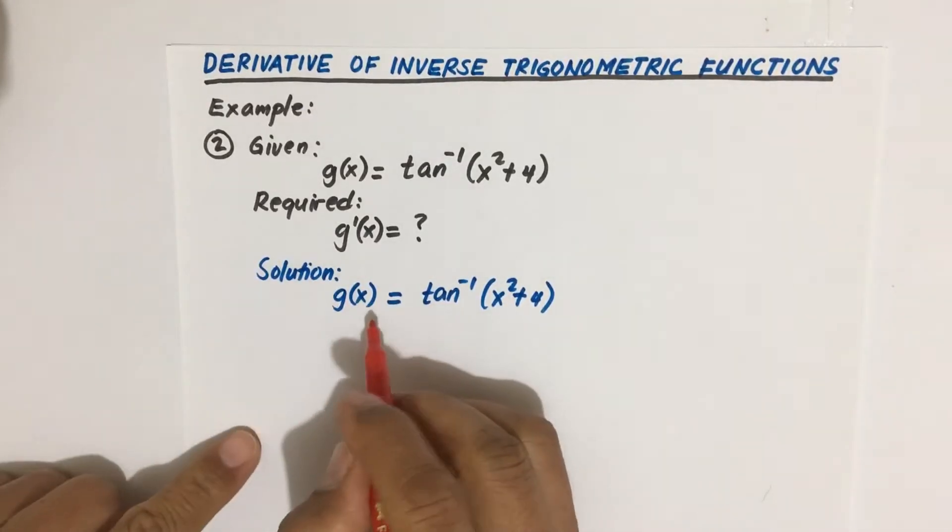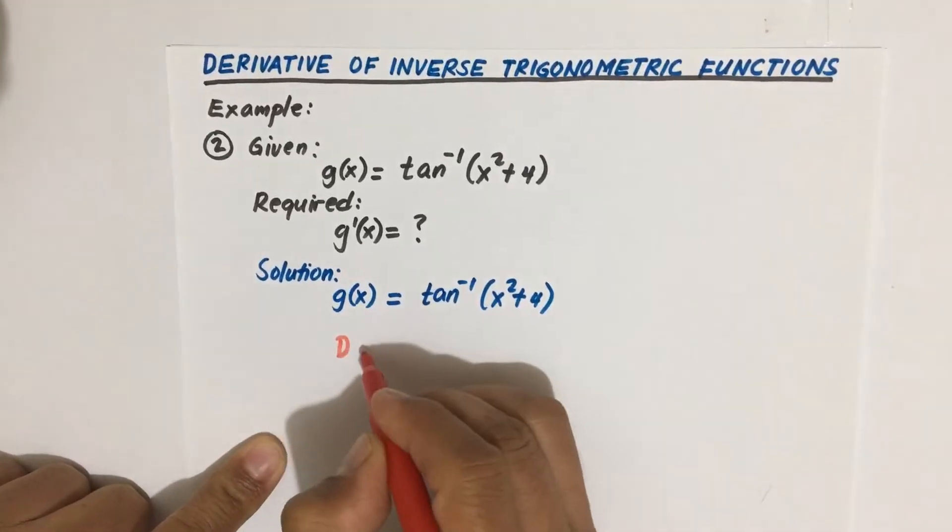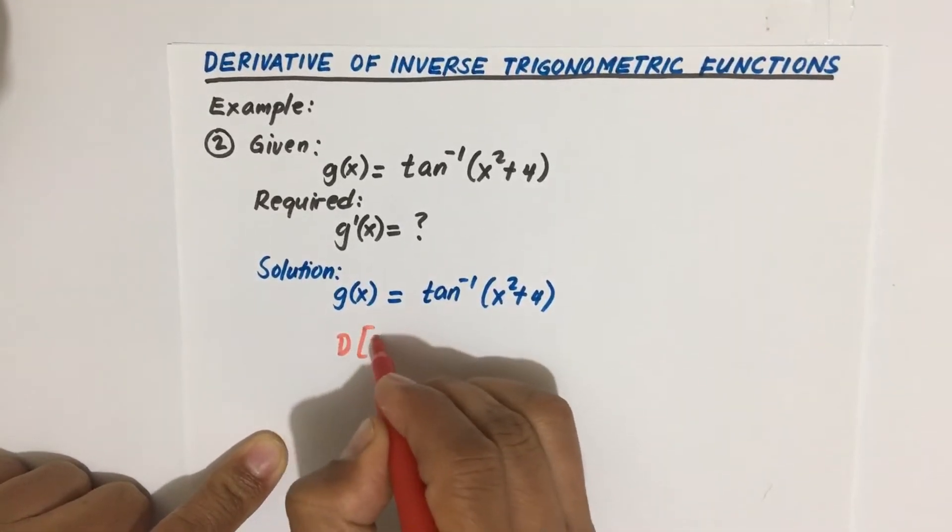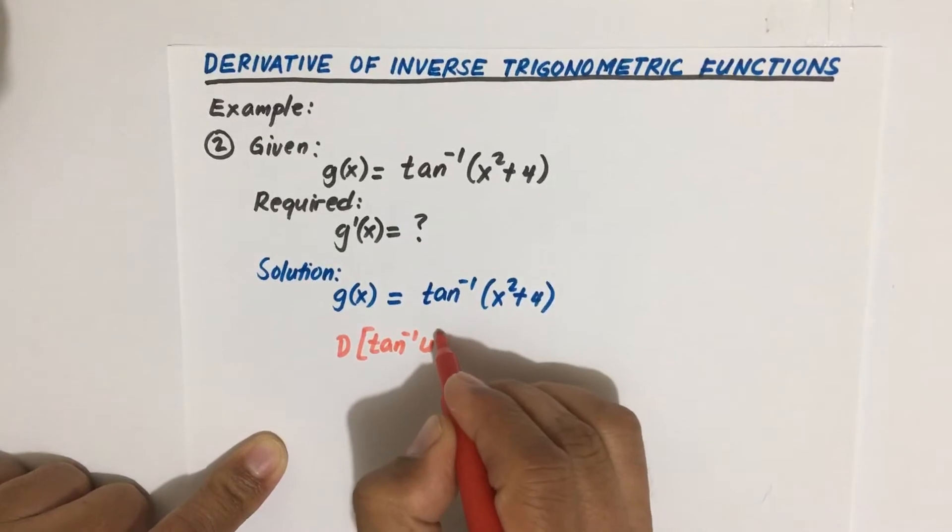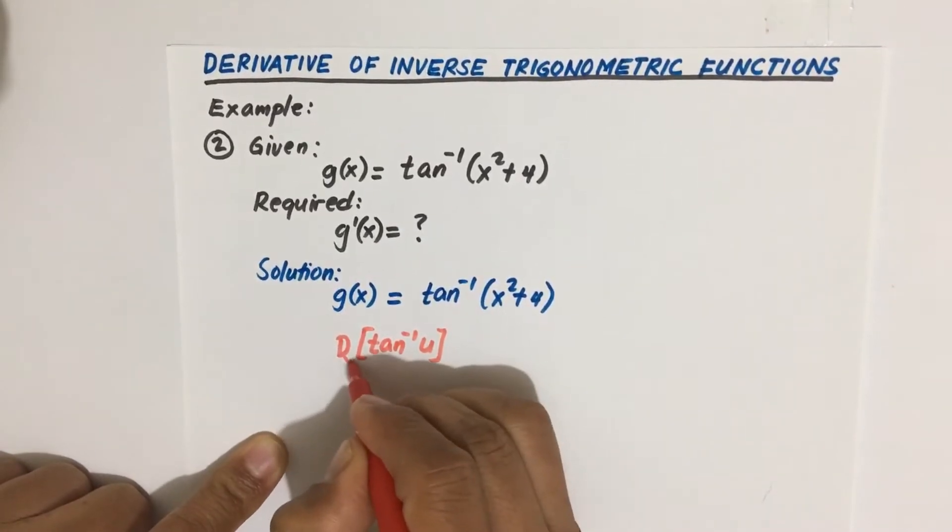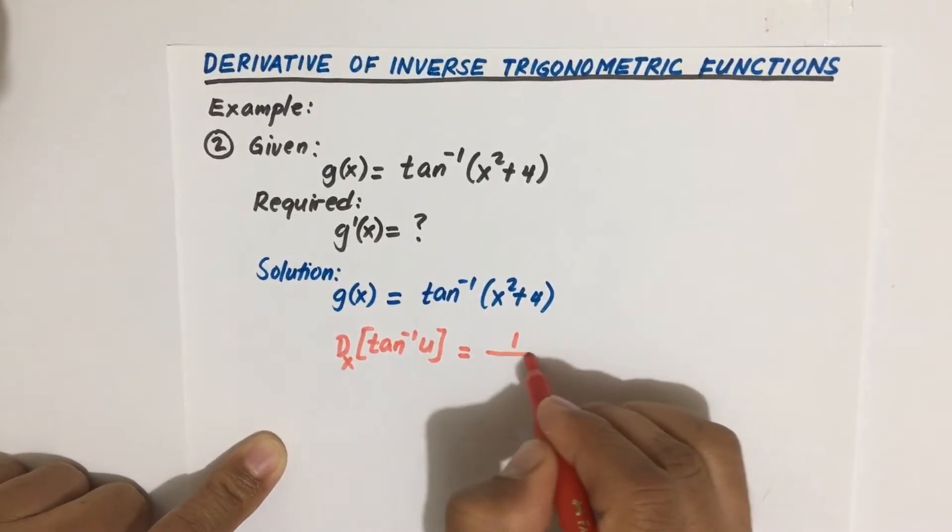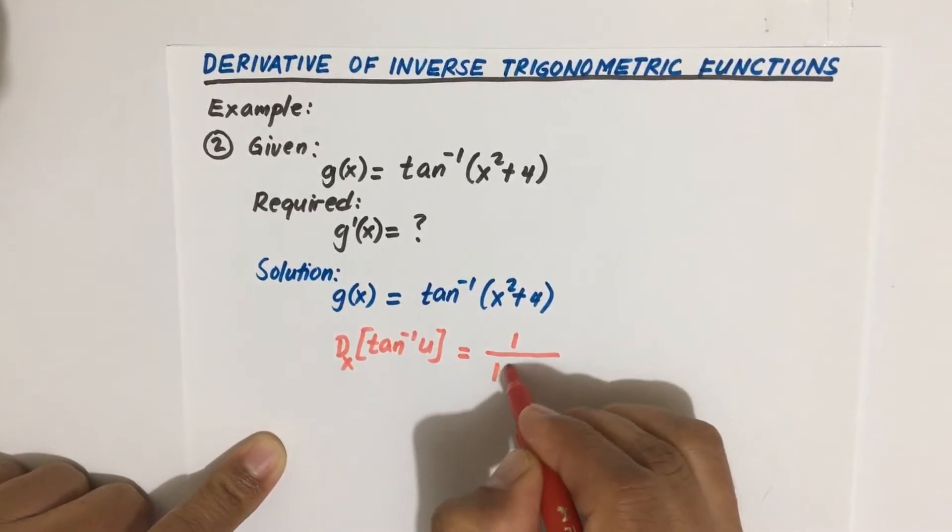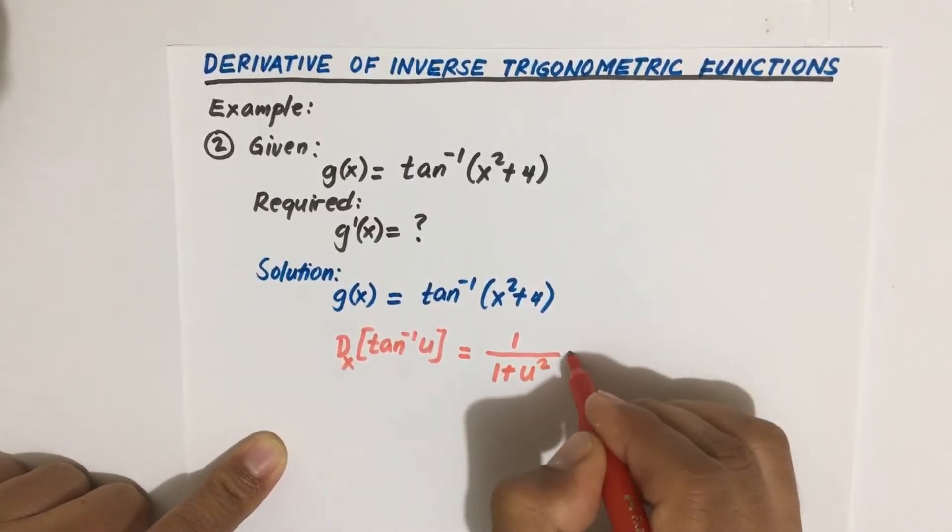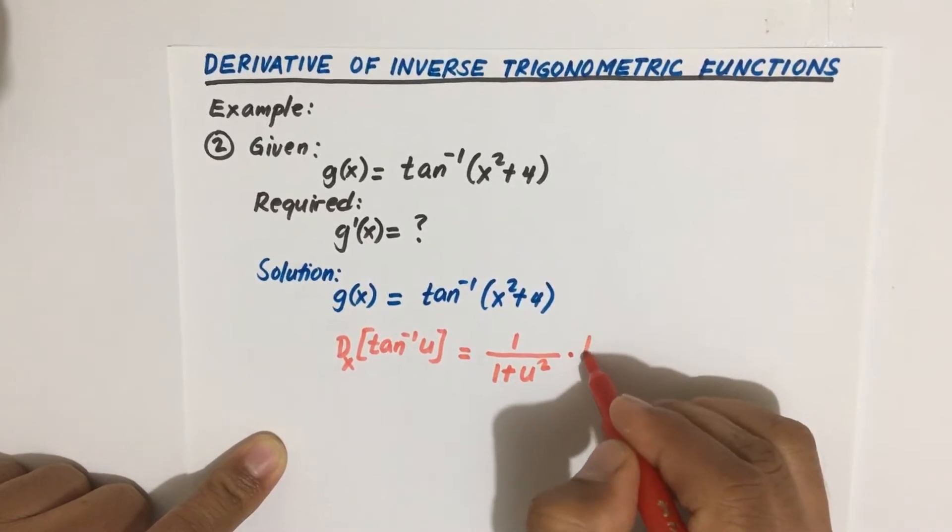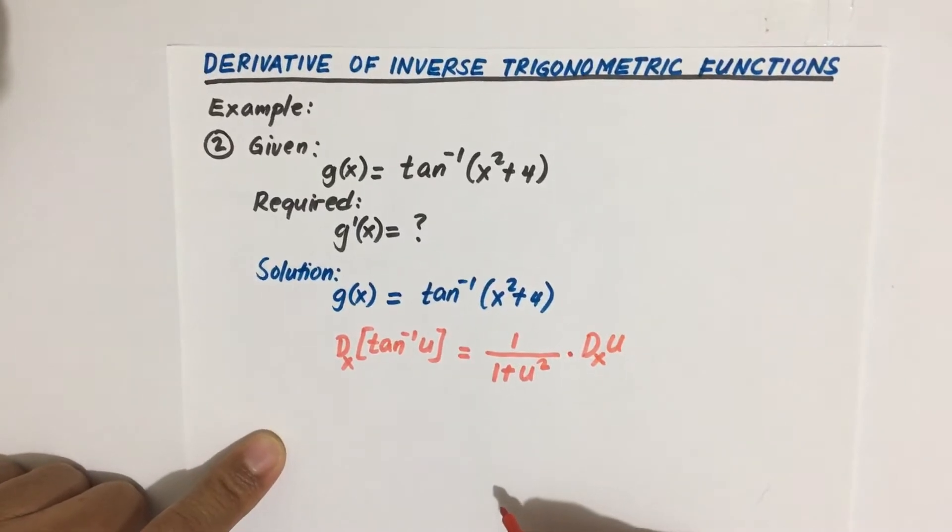So we have here the formula for derivative of inverse tangent u with respect to x is equal to 1 divided by 1 plus u squared times derivative of u with respect to x.